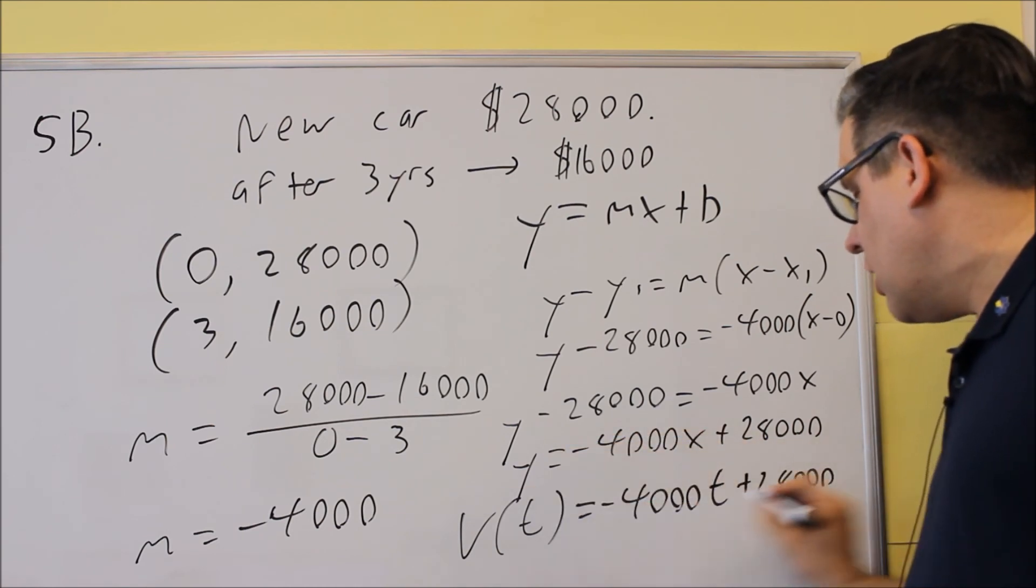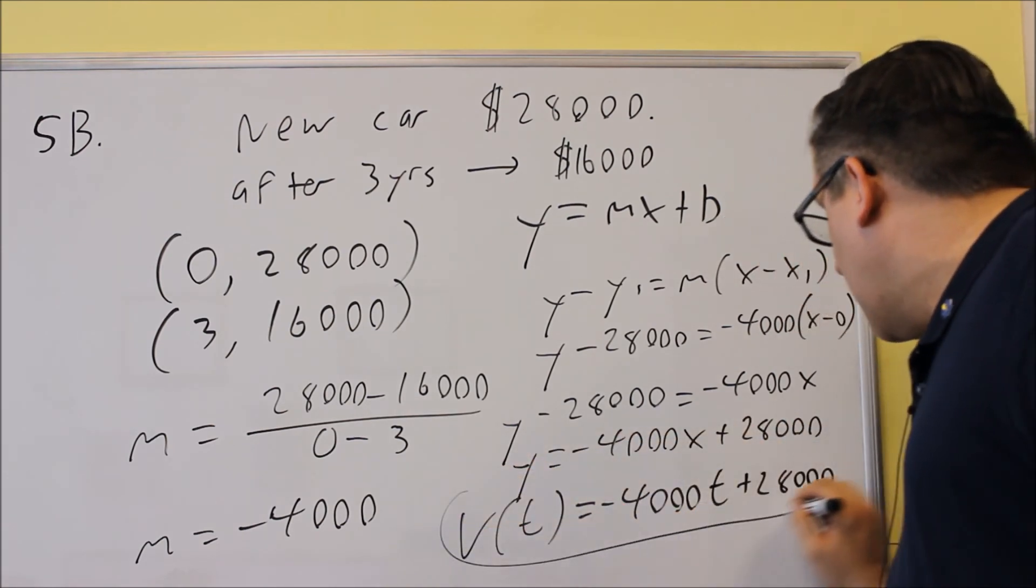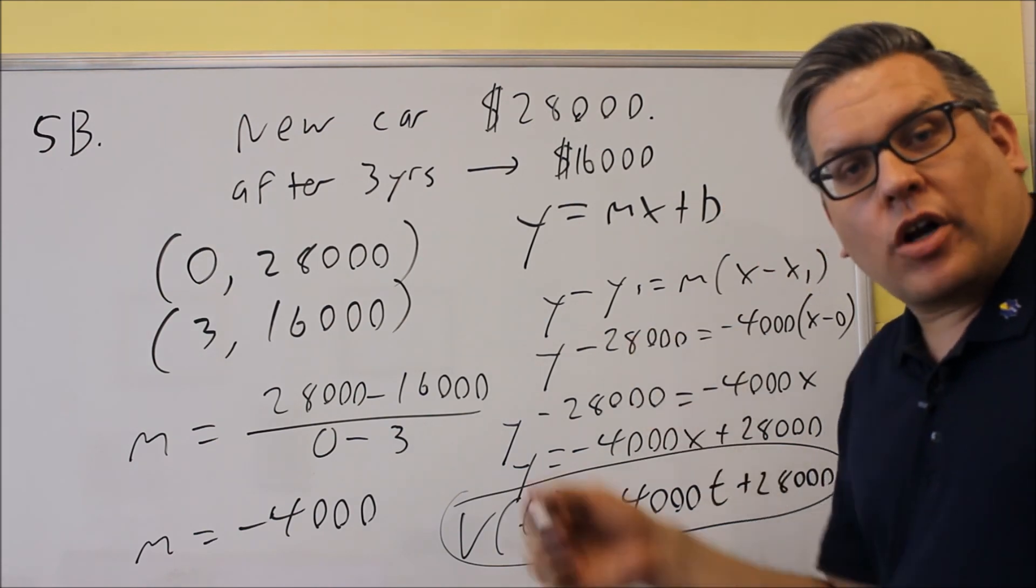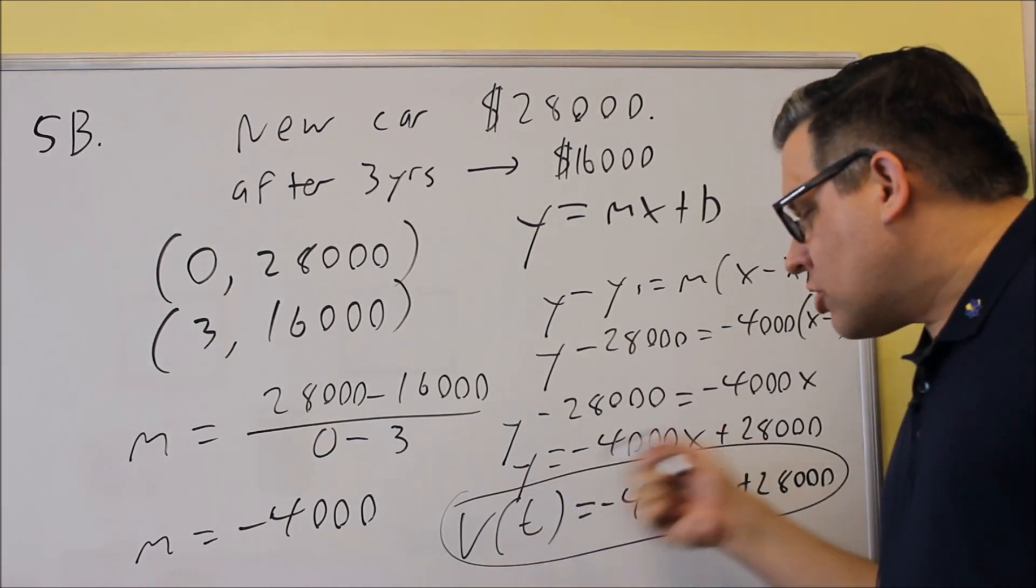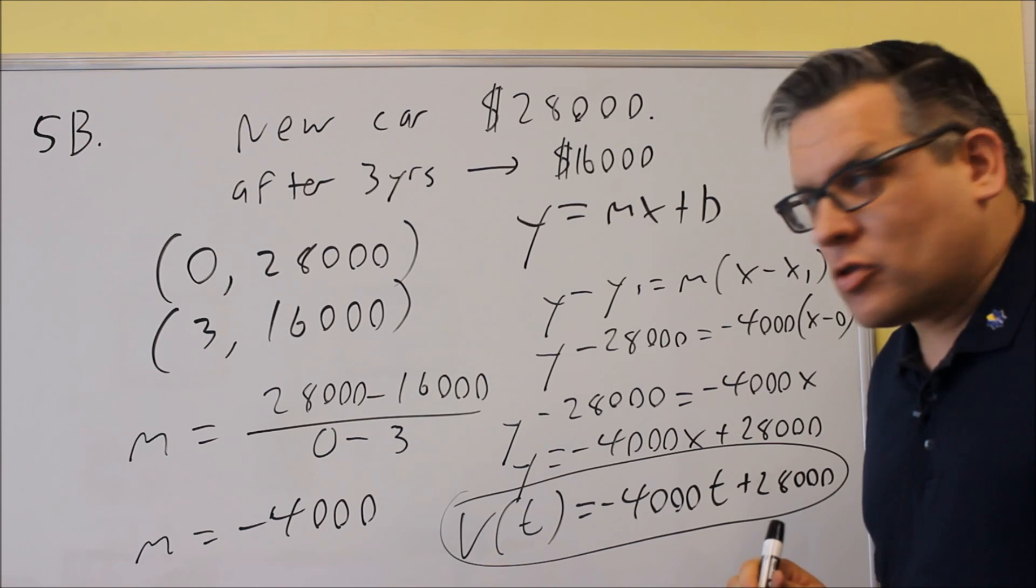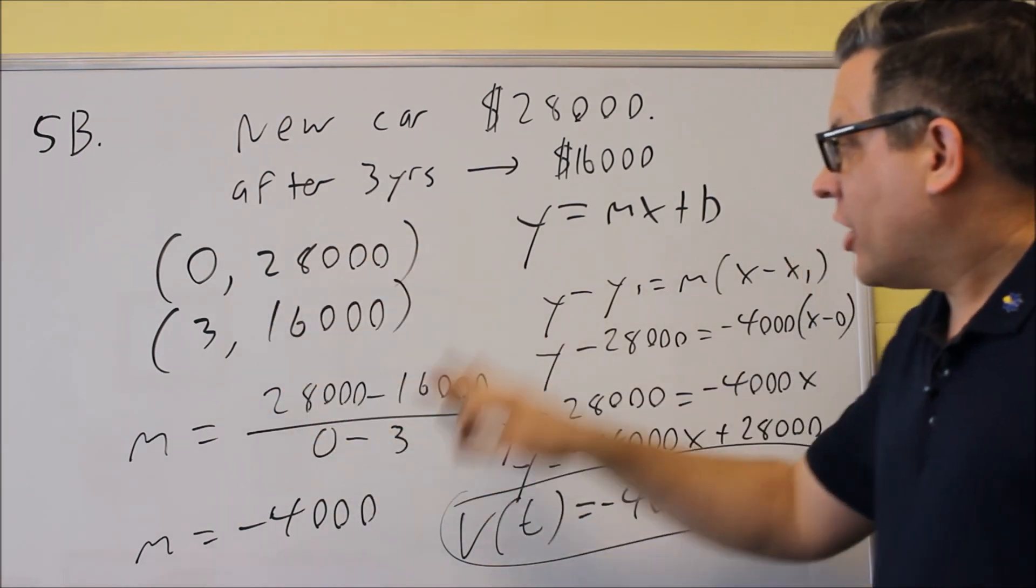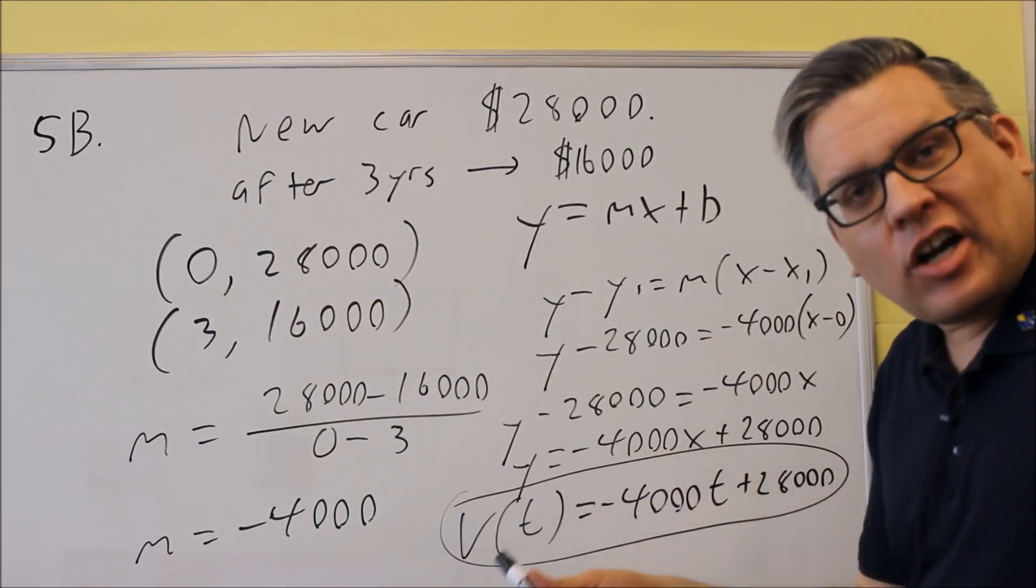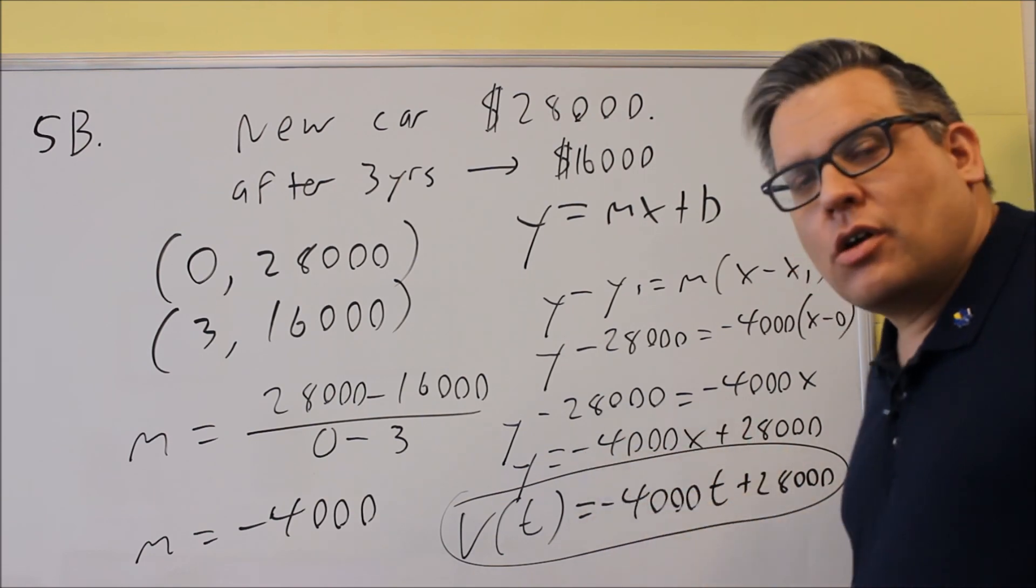This is the answer to 5B. They only want an equation. We have to use the correct variables. It's okay to do everything else with x's and y's, but for your final answer, make sure you put in the correct variables.